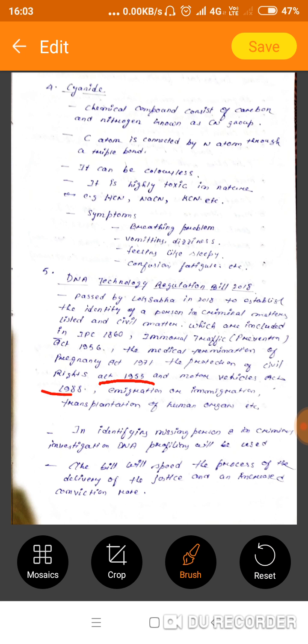Immigration or emigration, transplantation of human organs, etc., in identifying missing persons and in criminal investigation, DNA profiles will be used. This bill will speed up the process of delivery of justice and increase conviction rate.